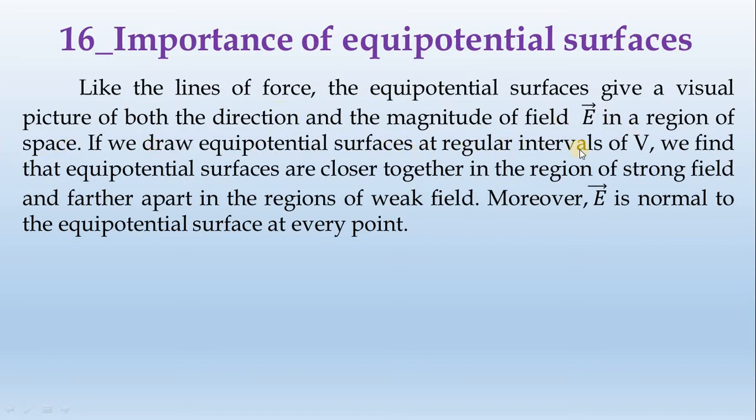If we draw the equipotential surfaces at regular intervals of V, we find the equipotential surfaces are closer together in the region of strong field and farther apart in the region of weak field. Moreover, E is normal to the equipotential surface at every point.